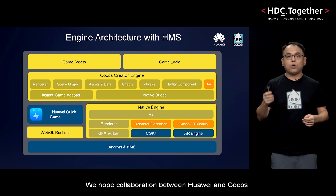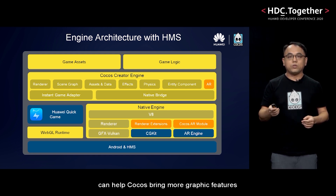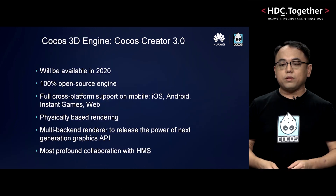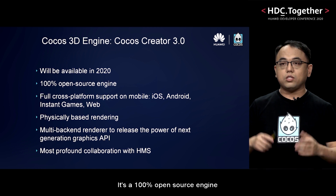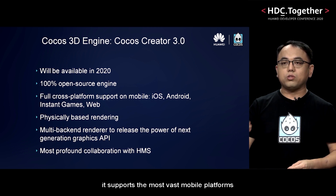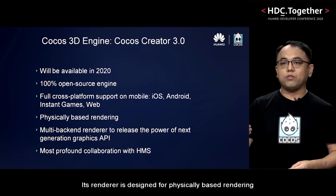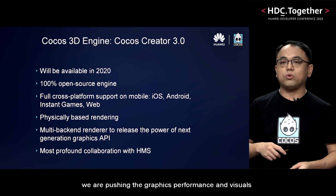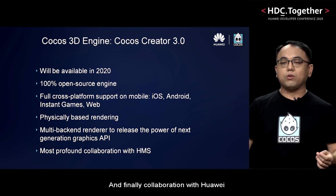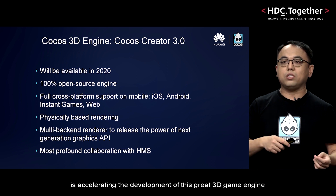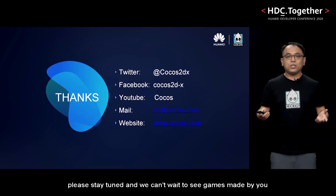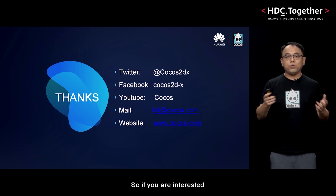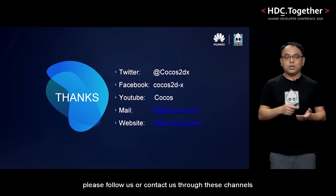We hope the collaboration between Huawei and COCOS can help bring more graphics features and higher performance to our developers. To conclude: the new 3D engine, COCOS Creator version 3, will be available in 2020. It is a 100% open-source engine that supports the most vast mobile platforms. Its renderer is designed for physically-based rendering with a powerful multi-backend design. We are pushing graphics performance and visuals using next-generation graphics APIs. Collaboration with Huawei is accelerating the development of this great 3D game engine. Dear developers, please stay tuned — we can't wait to see games made by you. If you are interested, please follow us or contact us through these channels. Thank you very much.